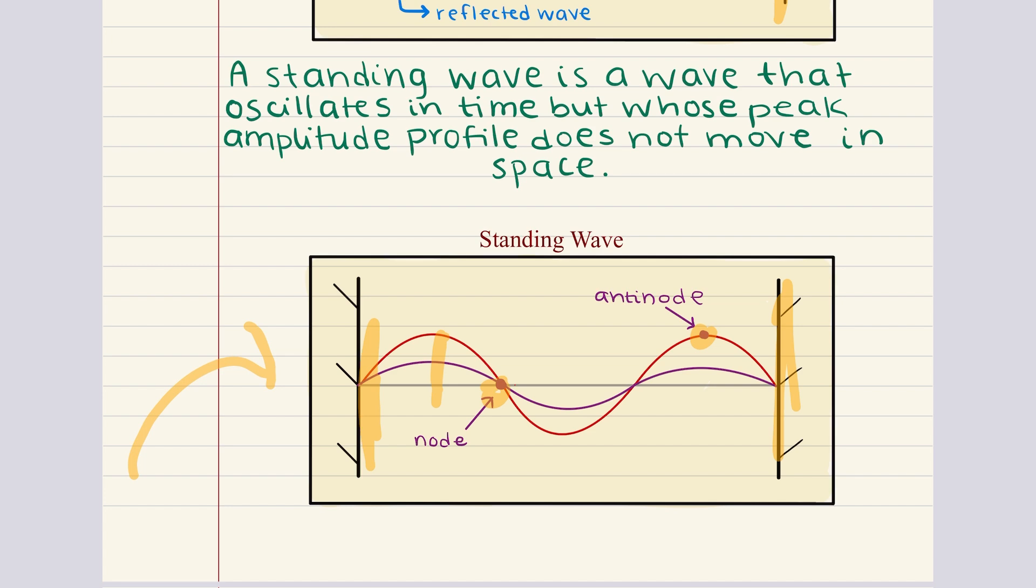Similarly, standing waves can form in pipes open at both ends following the same principles. The connection between the length of the string or the pipe and the wavelength of the standing wave is really key to understanding how these resonance systems work. And we're actually going to explore that further in objective two.